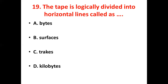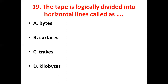19th bit: The tape is logically divided into horizontal lines called as dash. Option A, Bytes. Option B, Surface. Option C, Tracks. Option D, Kilobytes. The answer is Option C, Tracks.